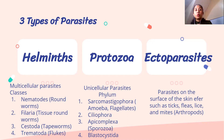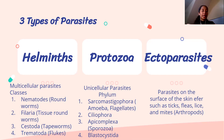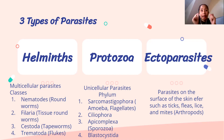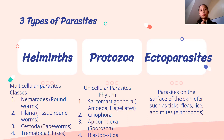Under protozoa, we have sarcomastigophora — amoeba and flagellates. Flagella are whip-like extensions, so some protozoa have a tail-like structure; an example is Trichomonas vaginalis. Next is ciliophora — instead of flagella, they have cilia; an example is Balantidium coli. Then we have apicomplexa, examples being sporozoa — the most famous being plasmodium, which causes malaria. And we have blastocystida.